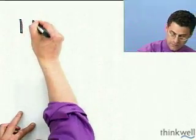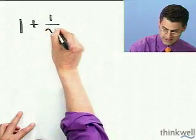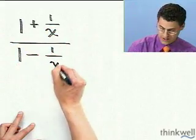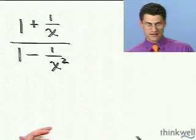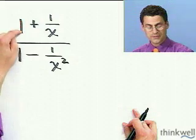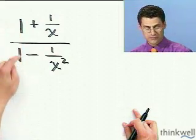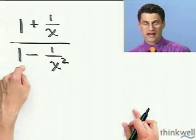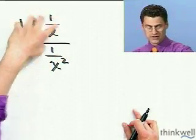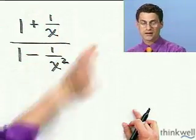Suppose we have 1 plus 1 over x divided by 1 minus 1 over x squared. Again, two methods to do this. I could get a common denominator here, multiplying the 1, top and bottom, by x over x, multiplying this 1, top and bottom, by x squared over x squared, getting one big fraction here, one big fraction here, invert and multiply. That will work.